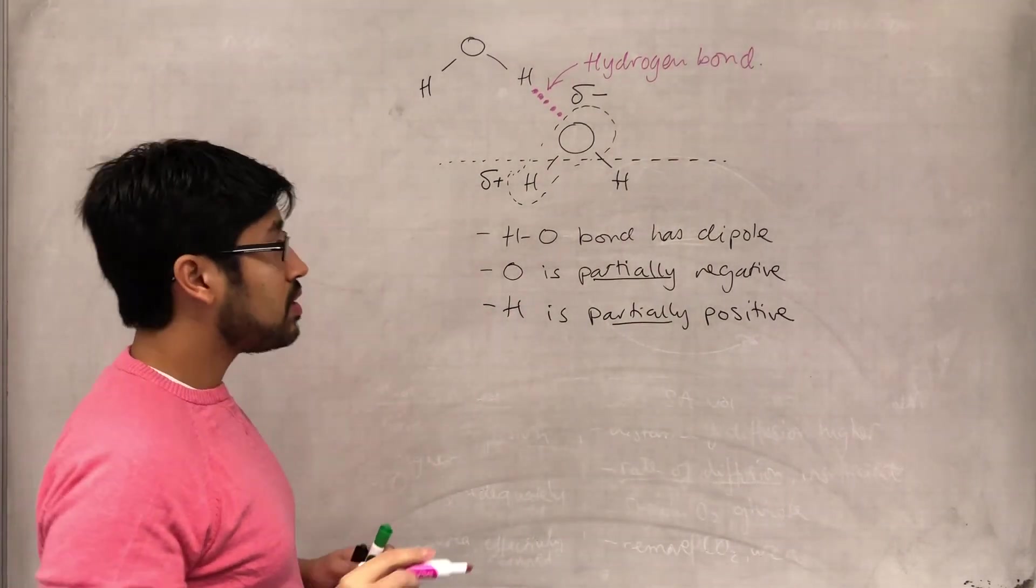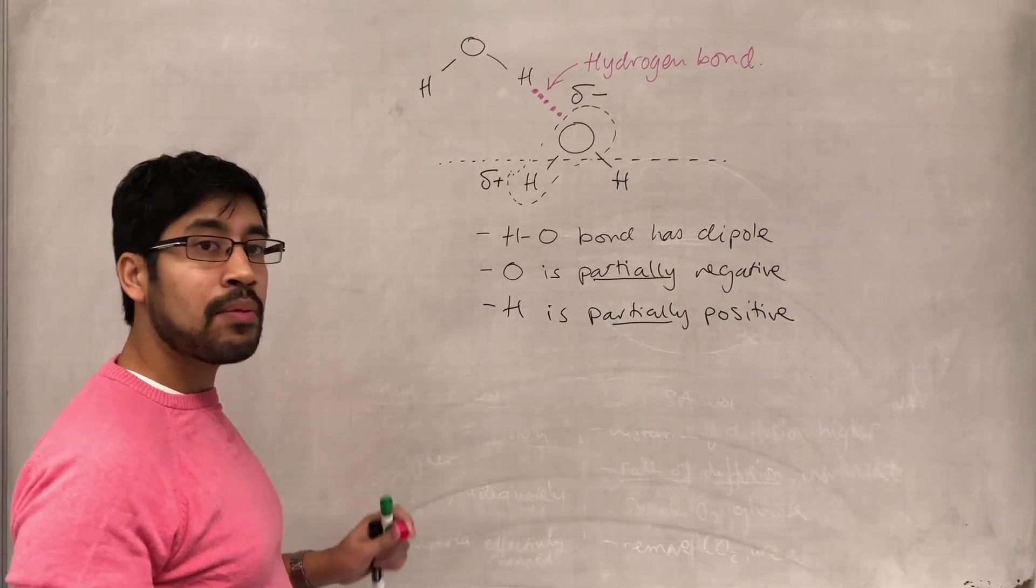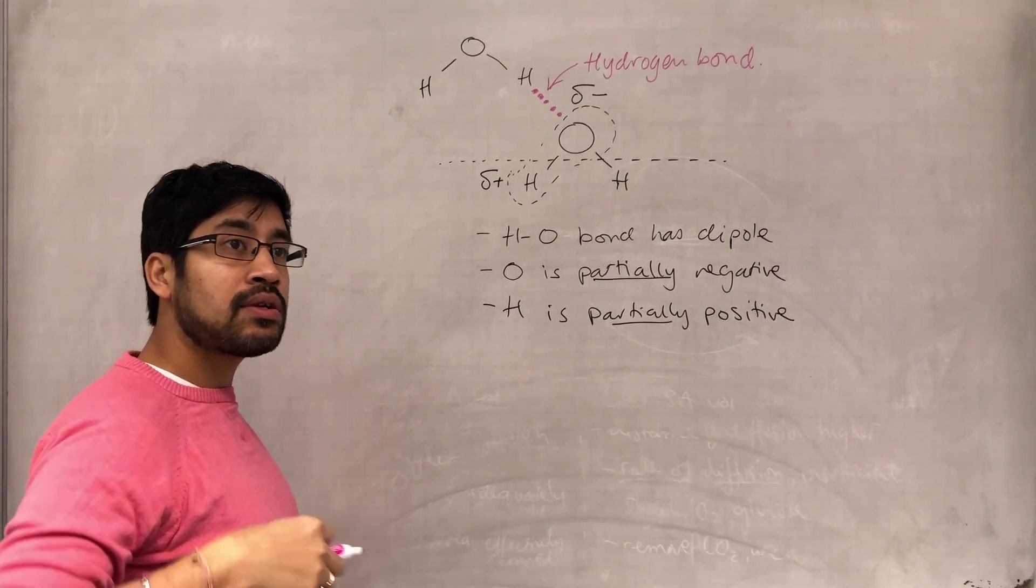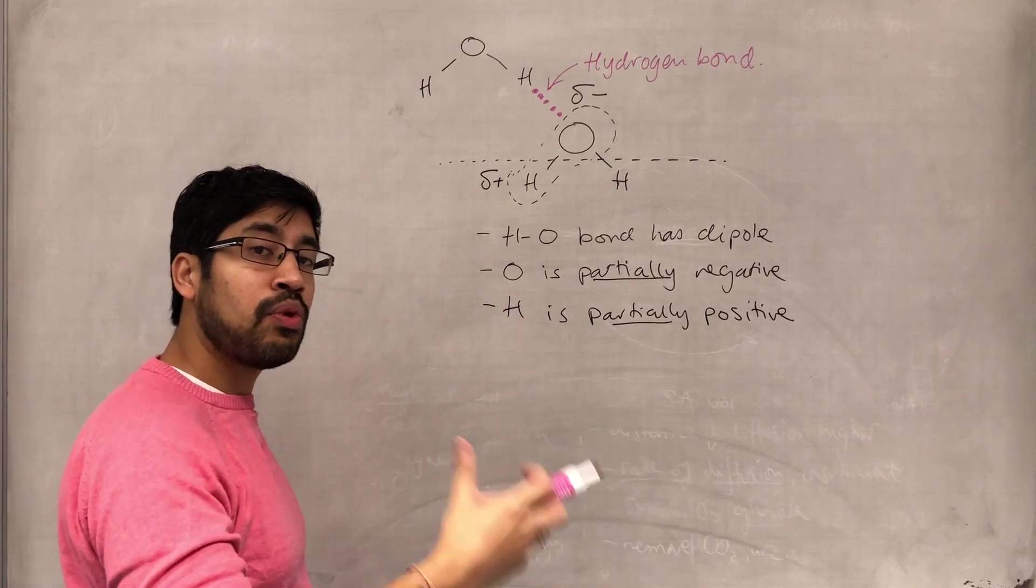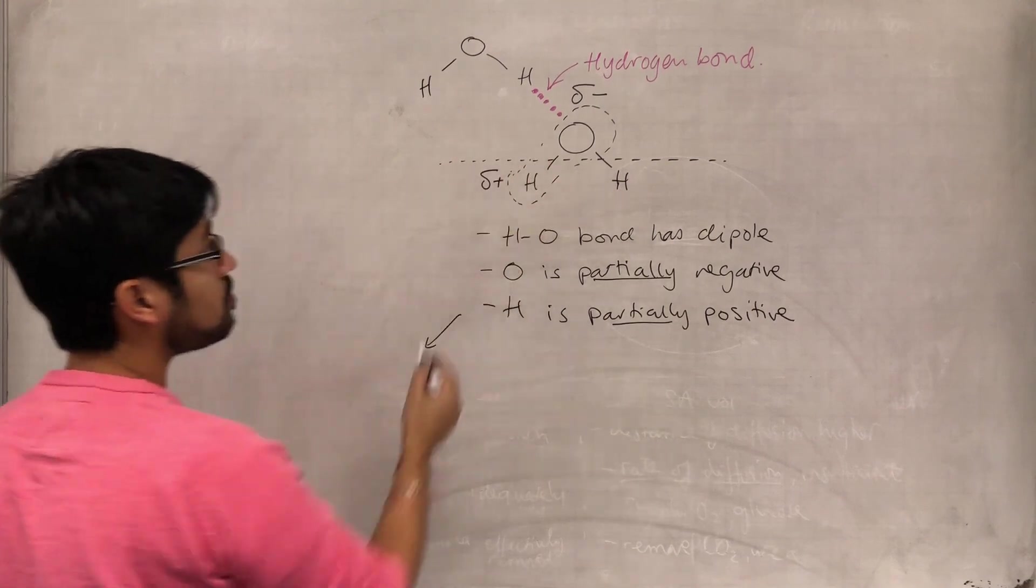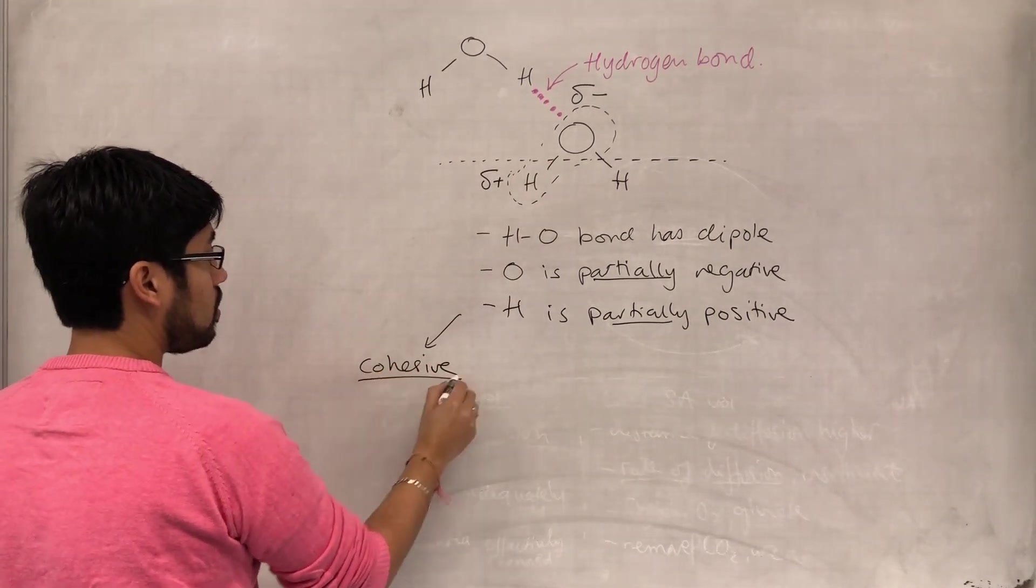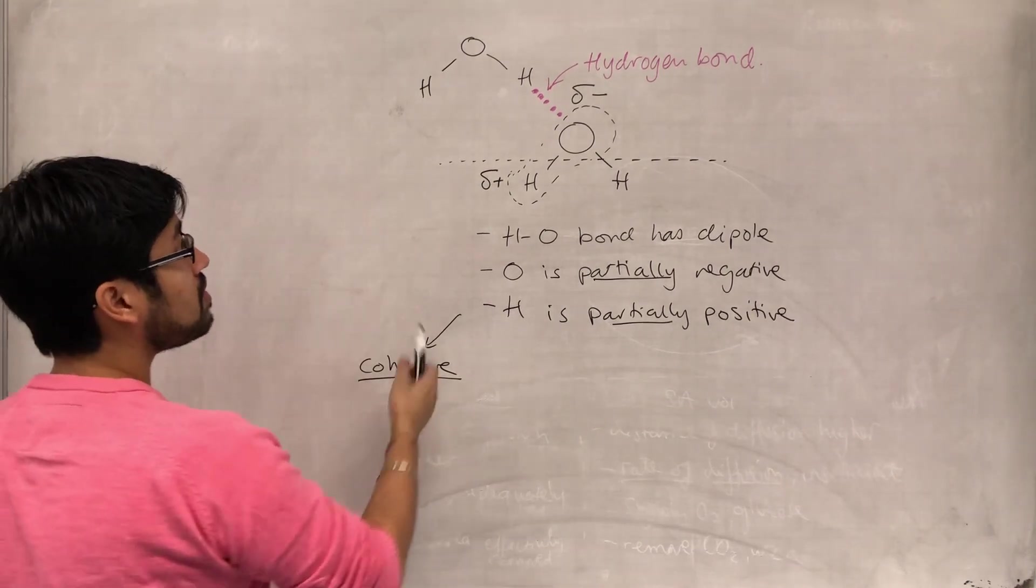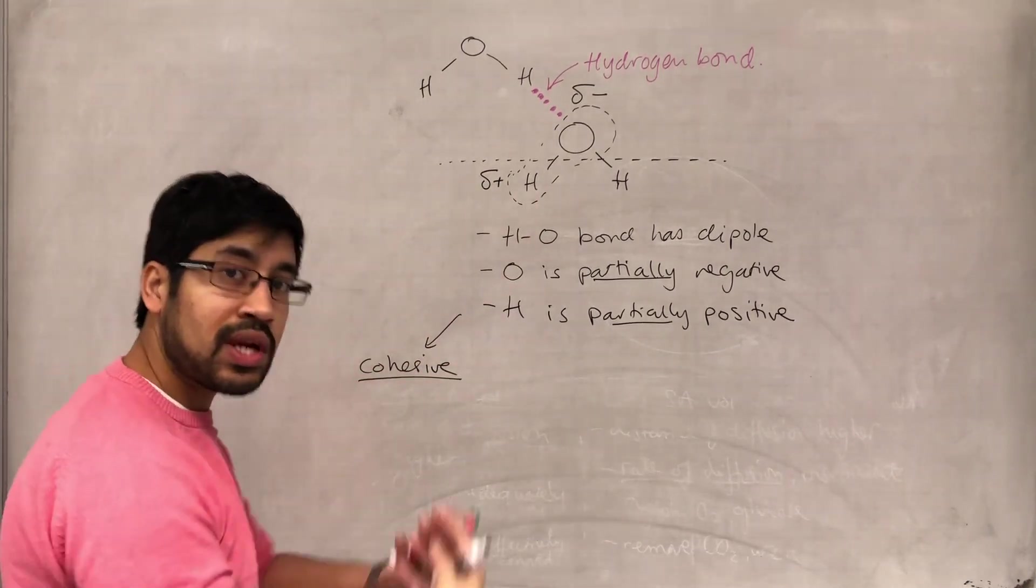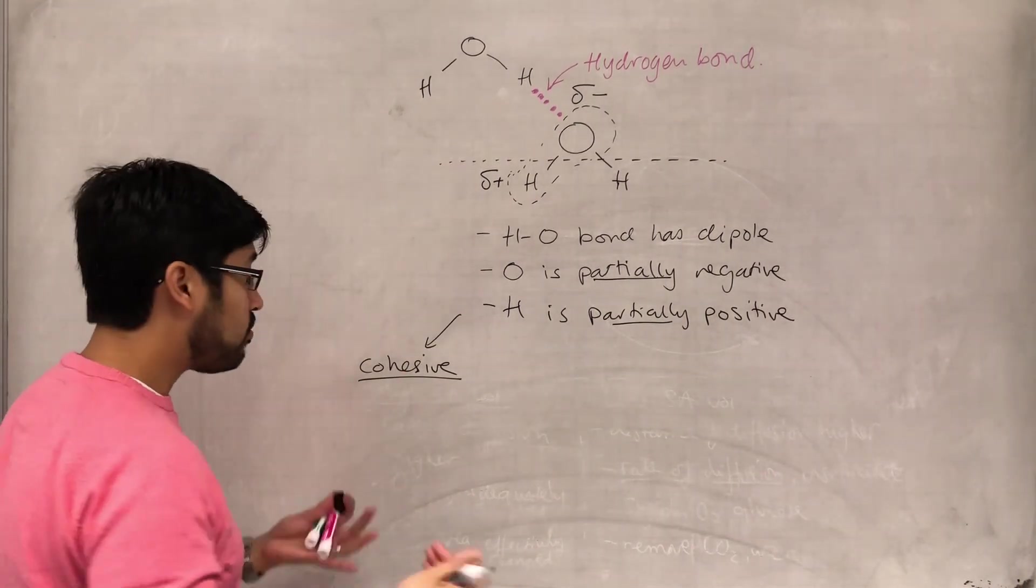Now that hydrogen bond results in a lot of water's key properties that allow it to have this important role as a transport medium. First of all, the hydrogen bonding keeps water cohesive. That means that the water molecules are attracted to each other. And because they're cohesive, then they form a fluid.